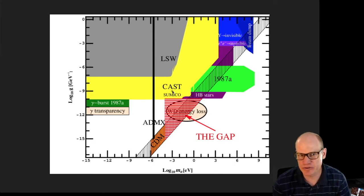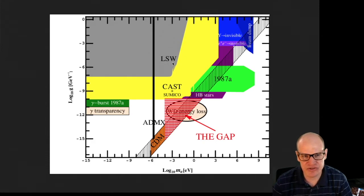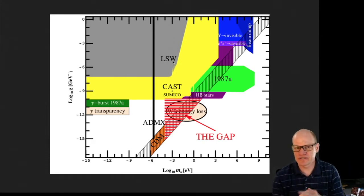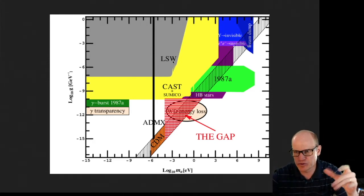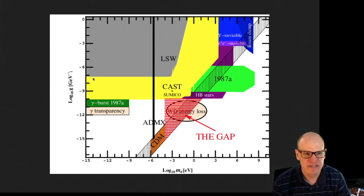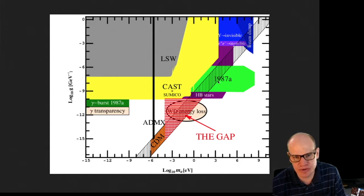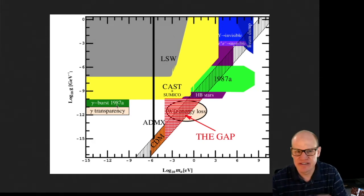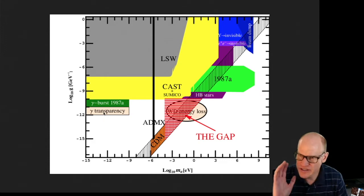The CAST experiment is what we're going to be talking about today. The LSW — light-shining-through-wall — experiment is what we talked about before: you shine a laser in a magnetic field, produce axions, they reconvert, and light comes out the other end into a photomultiplier tube. There are also more constraints from supernova 1987a from the gamma-ray burst, and then there's the gamma transparency issue, which is interesting.